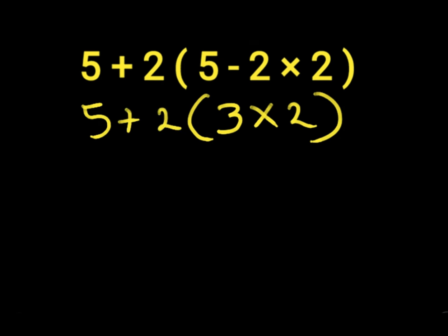In the parenthesis, we have 3 times 2, which gives us 6. Now we have 5 plus 2 times 6. 5 plus 2 gives us 7, then 7 times 6 gives us 42.